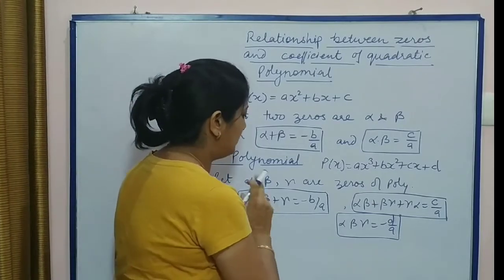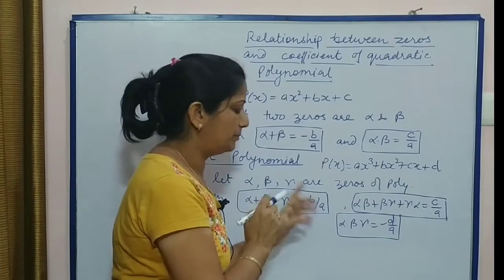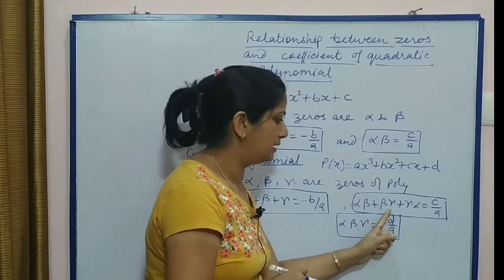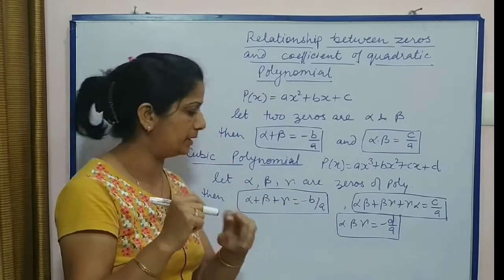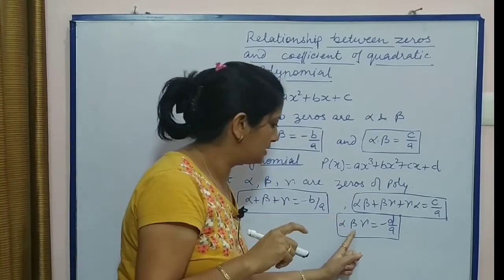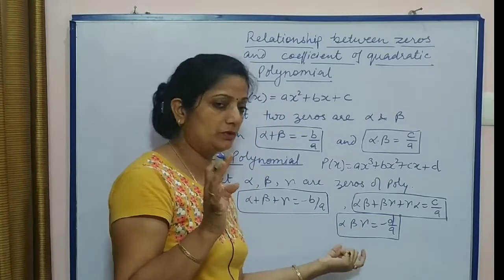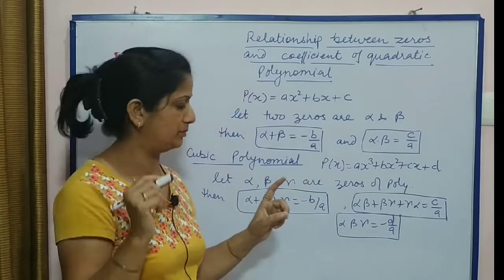So α + β + γ is -b/a - sum of the roots. αβ + βγ + γα is equal to c/a. And product of these three roots - these three zeros, not roots. Roots hote hain equation mein. α × β × γ is -d/a.